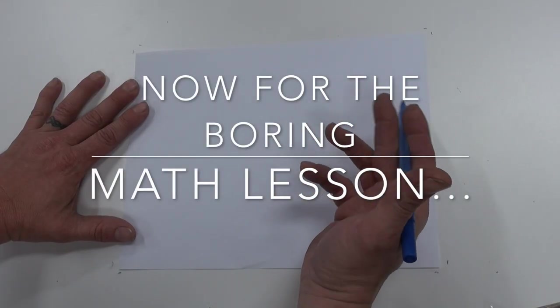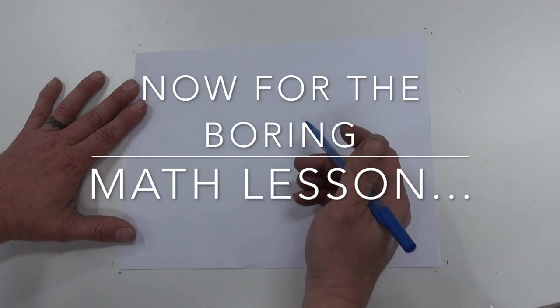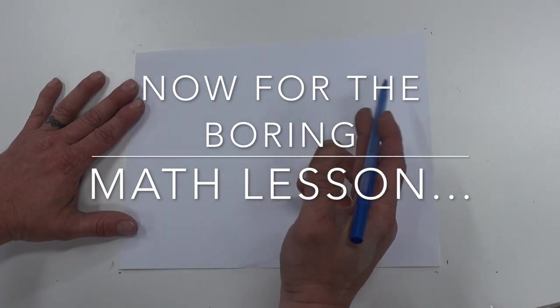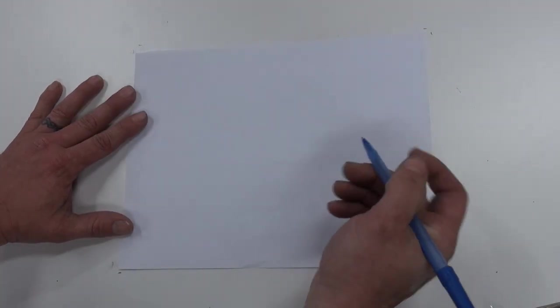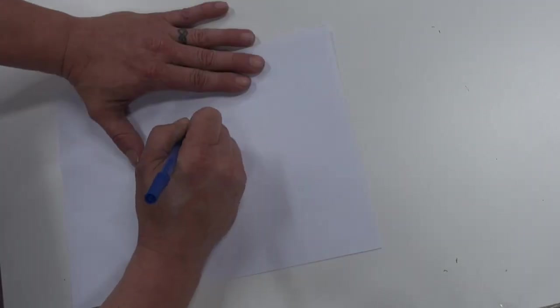I'm going to show you how I go about mathematically laying out a quarter round sunburst. Now a sunburst can be any configuration. It could be quarter round, half round, elliptical, they're all laid out the same way. You start with a circle.